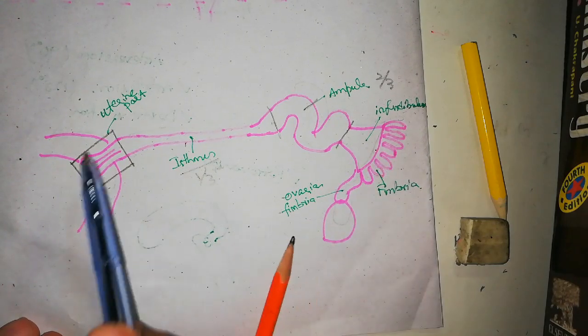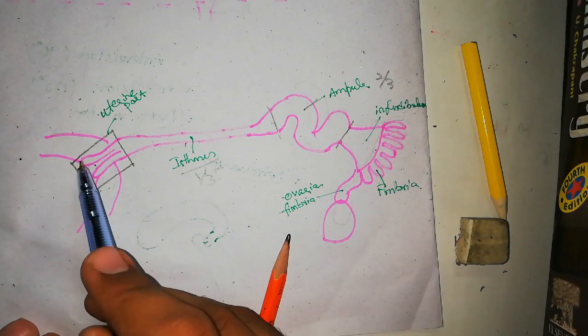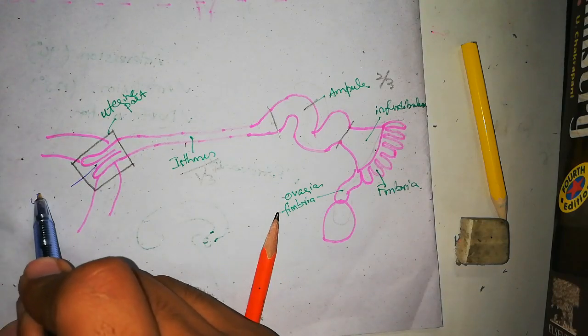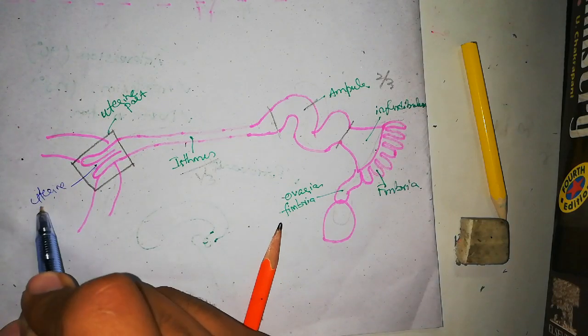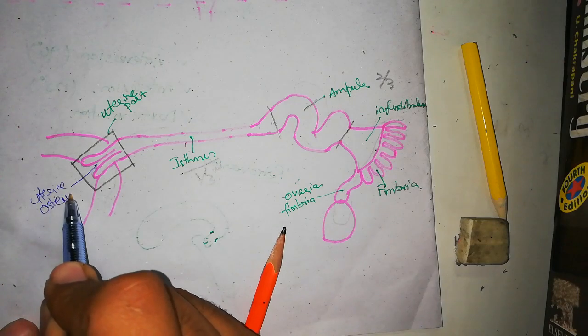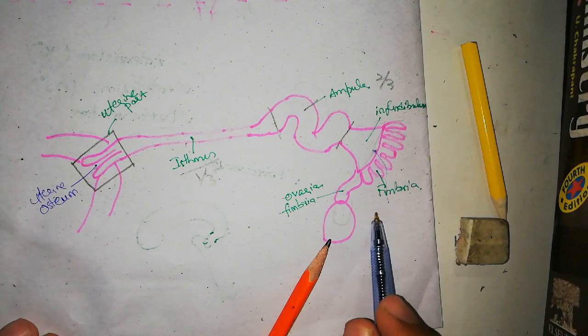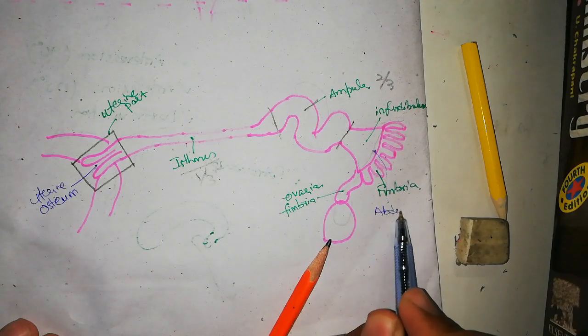As we can see, there are two openings, right? One opening here and one opening here. This opening, the uterine opening, will be called uterine osteum, whereas this external opening will be called abdominal osteum.